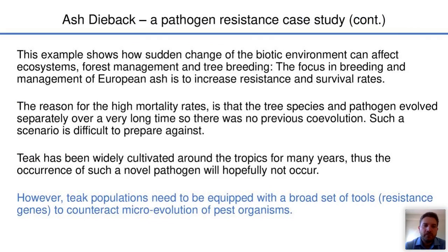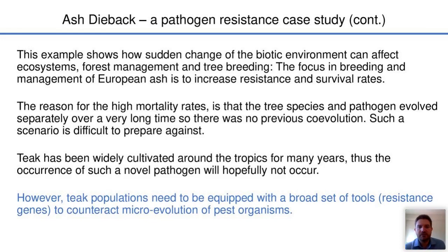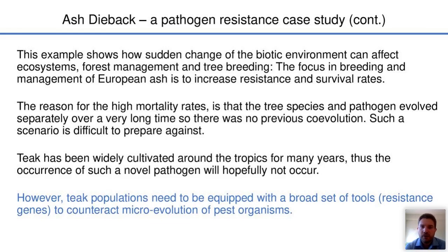This example shows how sudden change of the biotic environment can affect ecosystems, forest management, and tree breeding. The focus in terms of breeding and management of European ash is now to increase resistance and survival rates. The reason for these very high mortality rates is that the tree species and the pathogen evolved separately over a very long time — there was no previous co-evolution between the two species. Luckily, teak has been widely cultivated around the tropics for many years, so the occurrence of such a novel pathogen is hopefully unlikely. However, the point is that teak populations also need to be equipped with a broad set of tools — meaning resistance genes — to counteract the microevolution of pest organisms.